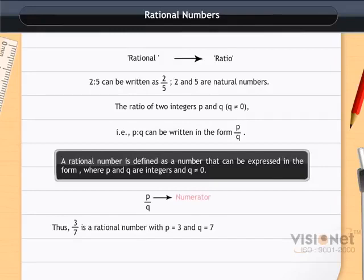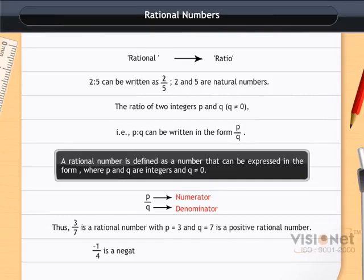Note here, both the numerator and the denominator are positive, so it is a positive rational number. Also, -1 by 4 is a negative rational number, as the numerator -1 is a negative integer and the denominator 4 is a positive integer.